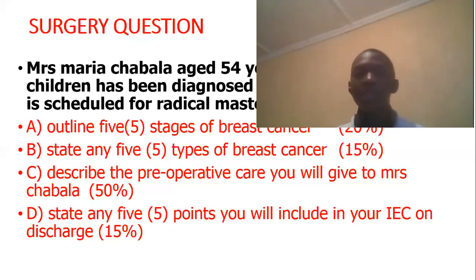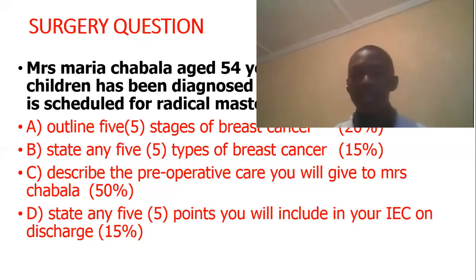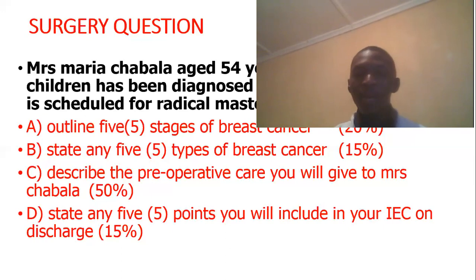Tell the patient both the good and bad outcomes so they have a proper understanding — if things go badly the outcome may be this, if things go well the outcome may be this, and the best option currently is radical mastectomy. Arrange for spiritual care according to the patient's religious affiliation and explain all medical and nursing procedures to be performed before surgery.